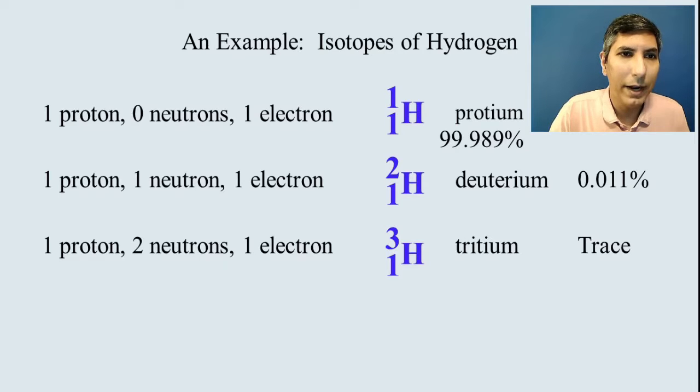So most atoms of hydrogen actually don't have any neutrons at all, and so we'd call that hydrogen-1. Sometimes we'd call it protium. That's a different name for that isotope. Almost all, something like 99.989% of all hydrogen atoms are that isotope. But there's another isotope that has one neutron. We call that deuterium or hydrogen-2. And it has about 0.011% of all the atoms of hydrogen that we know of in the world. And then there's a third isotope that's present in just a trace amount in nature. It's called tritium or hydrogen-3. And it has one proton and two neutrons. So these are how the isotopes are different. They have different numbers of neutrons.